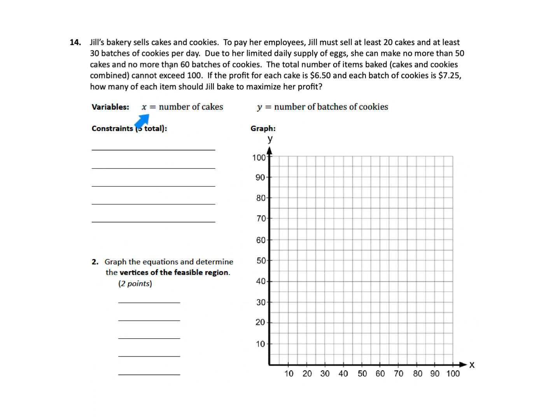So we want to know how many cakes and how many batches of cookies should Jill make. The variables are already defined for you. We'll let X be the number of cakes and Y be the number of batches of cookies. Now what we need to do for our first step is find the constraints. For the constraints, you want to look for key information from your system. Don't worry about the profit. We can't do the profit until the end, so those dollar amounts are not going to be part of your constraints.